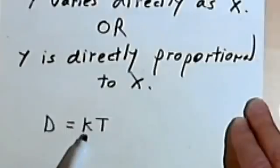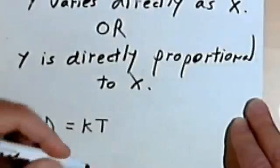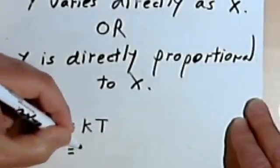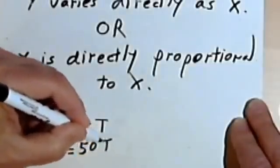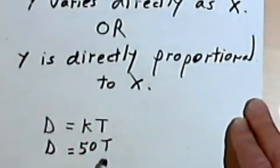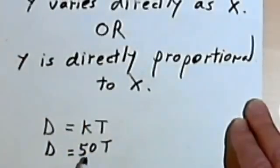Then this constant here, in other words, let's say they drive at 50 miles an hour. Then the distance is going to equal 50 times the number of hours. So this is a direct variation. The constant k is 50.